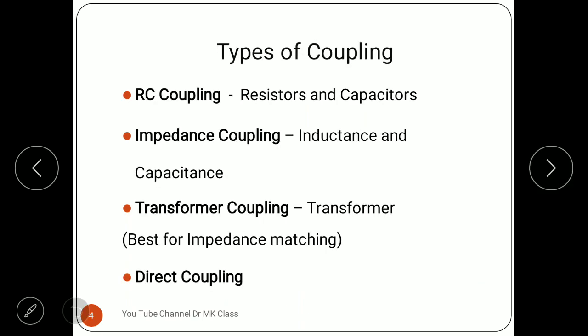What are the types of coupling? The first one is RC coupling. RC stands for resistor (R) and capacitor (C). When a network made of resistors and capacitors is used between two stages of amplifiers, it is called RC coupling.